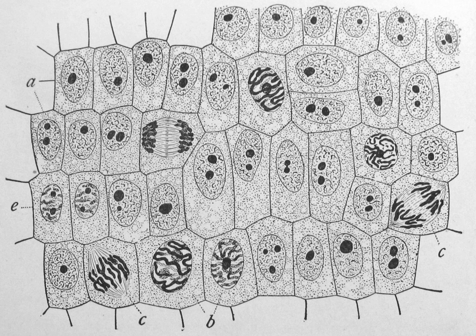When mitosis begins, the chromosomes condense and become visible. In some eukaryotes, for example animals, the nuclear envelope, which segregates the DNA from the cytoplasm, disintegrates into small vesicles. The nucleolus, which makes ribosomes in the cell, also disappears. Microtubules project from opposite ends of the cell, attach to the centromeres, and align the chromosomes centrally within the cell. The microtubules then contract to pull the sister chromatids of each chromosome apart. Sister chromatids at this point are called daughter chromosomes.